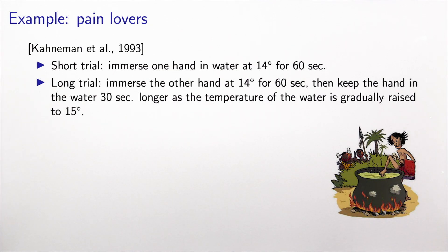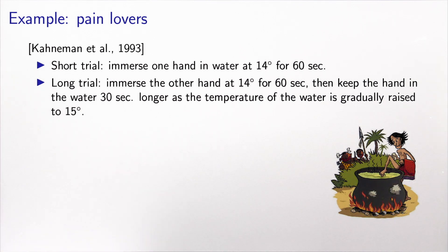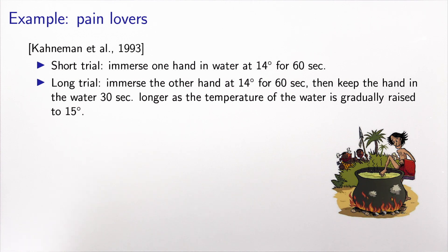The first experiment, proposed by Kahneman and co-authors, exposed individuals to the following trials. The short trial required immersing one hand in cold water at 14 degrees for 60 seconds. In the long trial, they immersed the other hand in cold water at 14 degrees for 60 seconds as well, but then were asked to keep the hand in the water for 30 more seconds while the temperature slowly increased to 15 degrees.